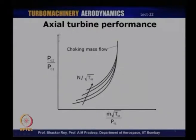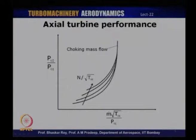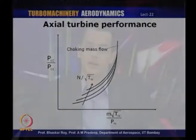Looking at the performance characteristics of a typical axial flow turbine — pressure ratio and mass flow as a function of varying speed — as speed changes, all the characteristics bunch and merge towards a single line: the choking mass flow. There is a certain limiting mass flow that affects axial turbine performance, limited by choking. This is very unlike the axial compressor, which had a distinct variation in performance with non-dimensional speed and a limiting surge line on the left side.